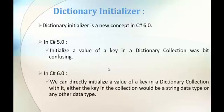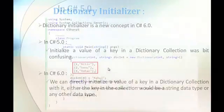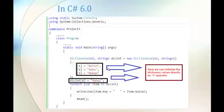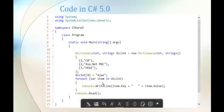Coming to C# version 6, you can directly initialize a value to a key in a dictionary collection, whether the key is a string type or another data type. This image explains it: in C# version 5 the syntax was braces, then the key, then a comma, then double braces to assign the value. But in C# version 6, it's very easy — you call the key with square brackets, then use the assignment operator to assign the value. Keys 1, 2, and 3 each get their values. That's what is special in C# version 6.